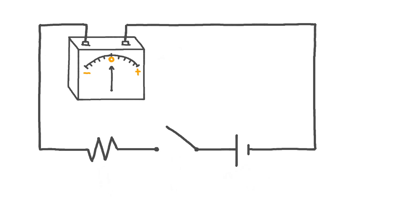This galvanometer has a scale with zero in the middle, and when no current is flowing — such as when the switch is open — the needle will point towards the zero. Allowing current to flow through the galvanometer in one direction will cause the needle to deflect one way, and allowing a current to flow in the opposite direction will cause the needle to deflect the other way. The total amount of deflection indicates the magnitude of the current.